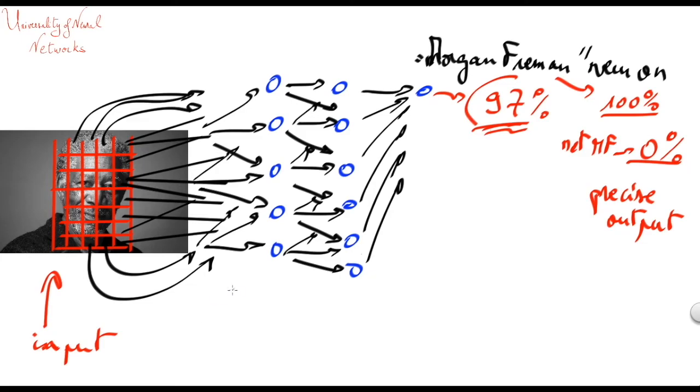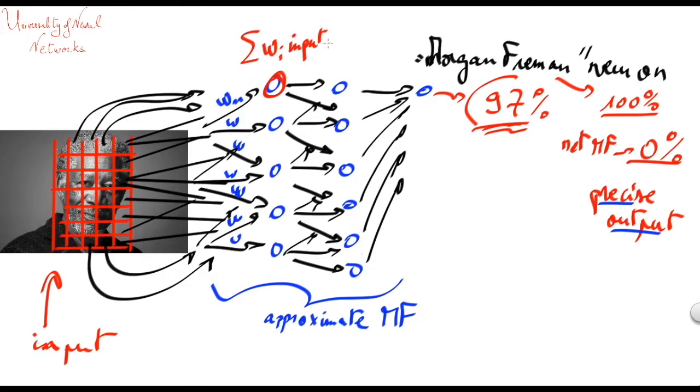So this would be the precise answer. And this was an approximate one. The claim is that with a neural network, we'll be able to approximate this precise function that recognizes Morgan Freeman. This network itself is made of only linear combinations. So we have here weights, which are coefficients, for each pixel. Each neuron will sum all the weights of all the input pixels and put all of this into an activation function that looks like this.